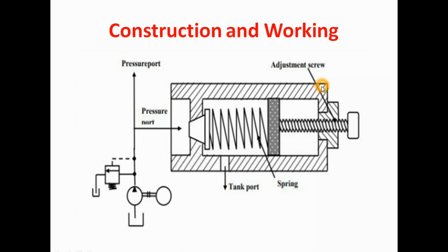You can see here — this is the body of the PRV, this is the adjusting screw, this is the spring, and this is the port. Whenever excess pressure is generated in the hydraulic circuit, due to the excess pressure this port gets open, this spring gets compressed, and oil starts to drain from this port and goes back to the hydraulic power pack. By adjusting this screw, we can change the setting pressure — that means at which pressure this PRV should open and drain the oil.